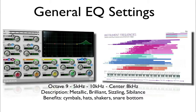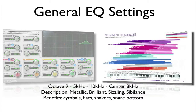Octave 9, 5 kHz to 10 kHz with a center point of 8 kHz, is going to make your sound a little more metallic, a little more brilliant, and add some sibilance to vocals. The instruments that benefit from this would be cymbals, hi-hats, shakers, and snare bottoms.